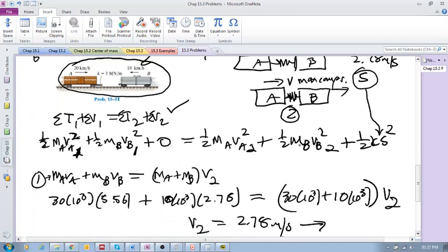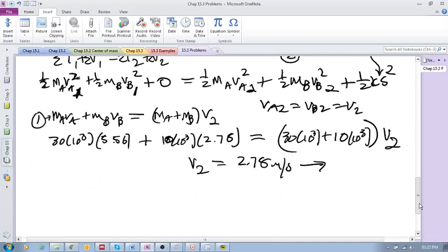What we wanted to do is use this equation to calculate our s, but we didn't have the final velocity. Remember v_A2 equals v_B2 equals v₂—this is all the same. You've got all the values: the masses, velocities at state one. Now we calculated the velocities at state two. We've got k, which is 3 meganewtons per meter. If you plug all the information in you will get s equals 0.481 meters.